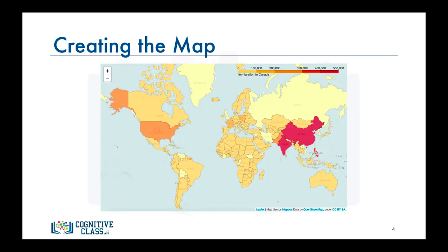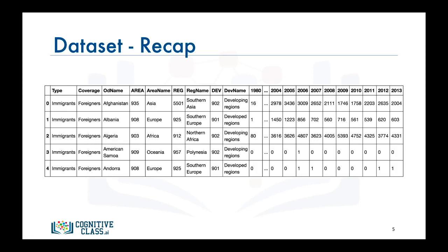So let's see how we can create a choropleth map of the world showing immigration to Canada. Before we go over the code, let's do a quick recap of our dataset. Recall that each row represents a country and contains metadata such as where it is located geographically and whether it is developing or developed. Each row also contains numerical figures of annual immigration from that country to Canada from 1980 to 2013.